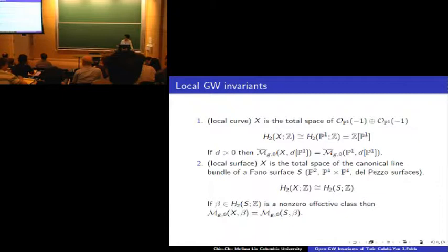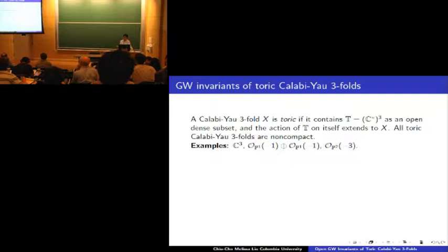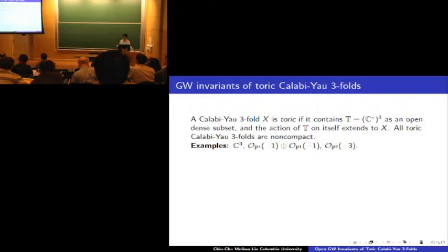O(-1) + O(-1) is an example of a toric Calabi-Yau threefold. A Calabi-Yau threefold X is toric if it contains the complex algebraic torus T = (C*)^3 as an open dense subset and the action of T on itself extends to X. All toric Calabi-Yau threefolds are non-compact. The most trivial examples are C^3, O(-1)+O(-1), and O(-3). We have seen that for the resolved conifold and O(-3) over P1, we can still define Gromov-Witten invariants for any genus and any non-zero degree.